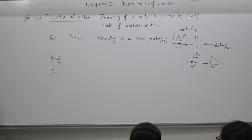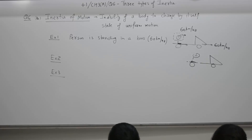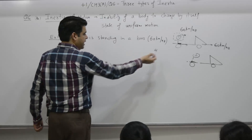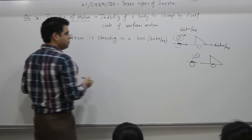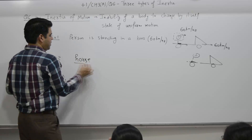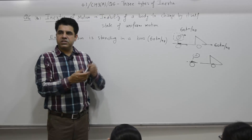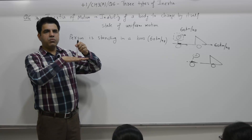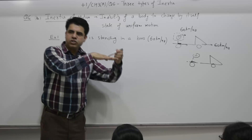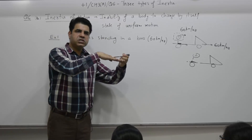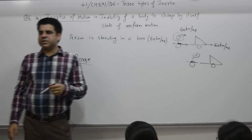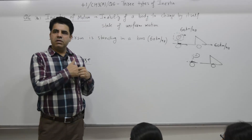Example two: when a horse at full gallop stops suddenly. A person is on the horse and both are moving at say 30 kilometers per hour. The horse stops suddenly and comes to rest, but the person continues to move with the same speed, so the person will fall forward.